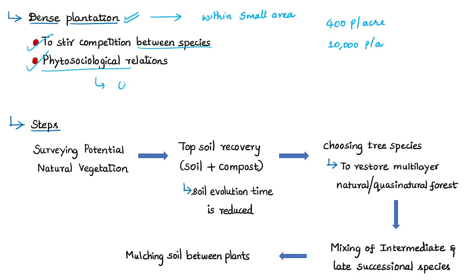This density is required to stir competition between species and to trigger phytosociological relations similar to natural forests. Phytosociology is the branch of ecology that deals with the characteristics, classification, relationships, and distribution of plant communities. In some cases this density also eliminated the need for insecticides and pesticides, because pests and insects are suppressed in the competition between species.